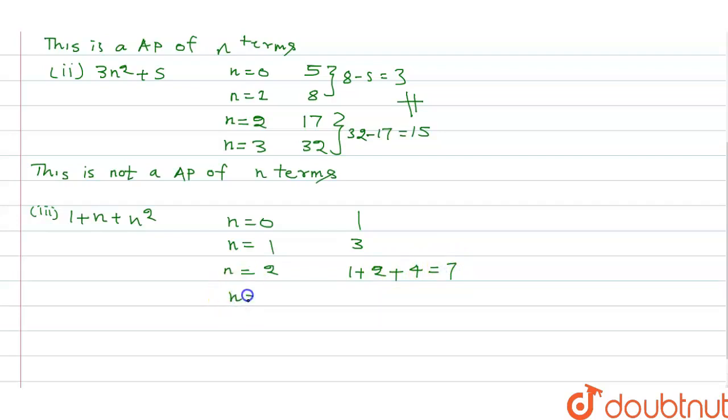For n equals 3, what we get, 1 plus 3 plus 9, that is equal to 13. Here d is what, 3 minus 1, this is 2. And here d is what, 13 minus 7, that is equal to 6. So here 2 is not equal to 6, so hence we can say this is not an AP of n terms.